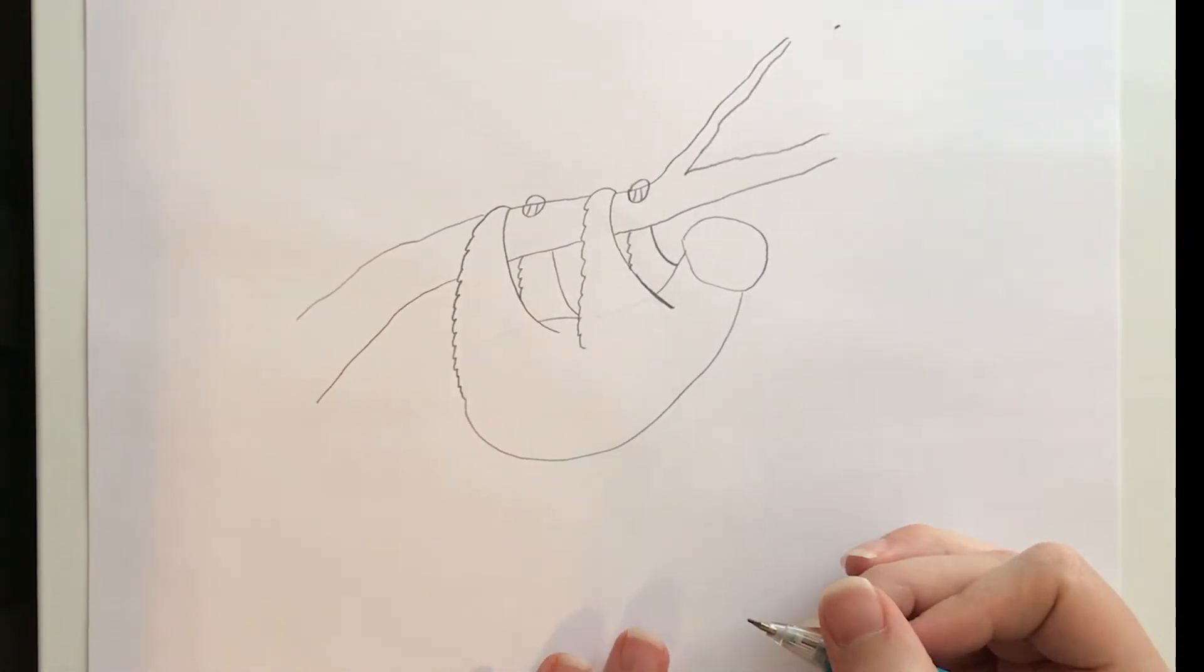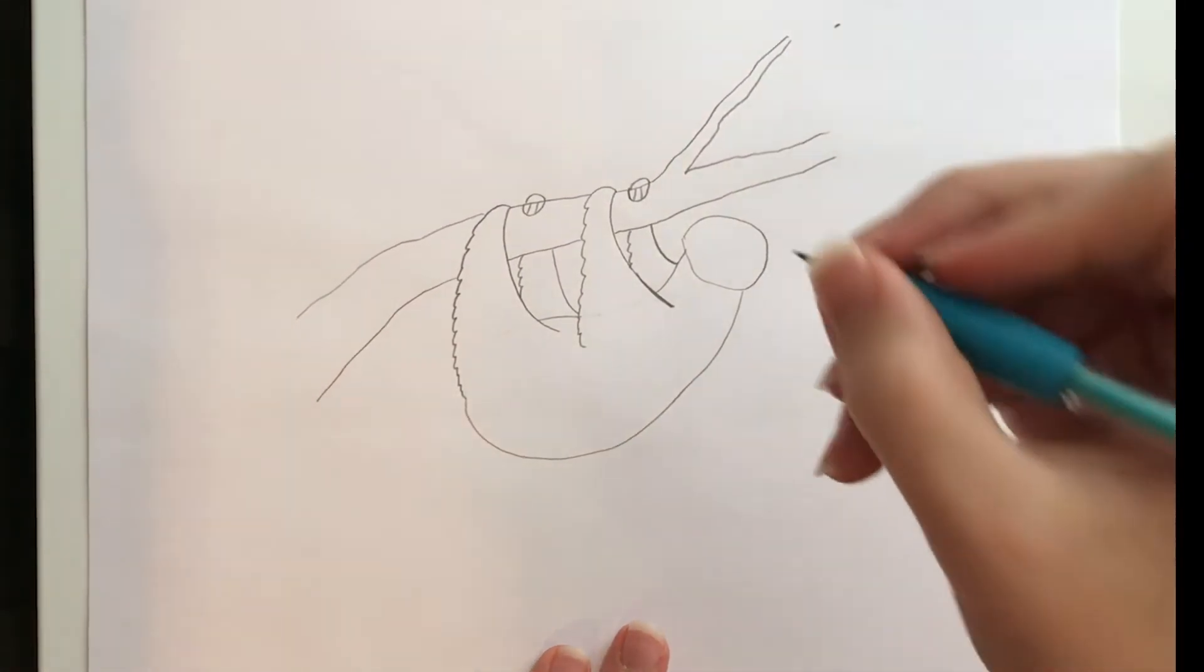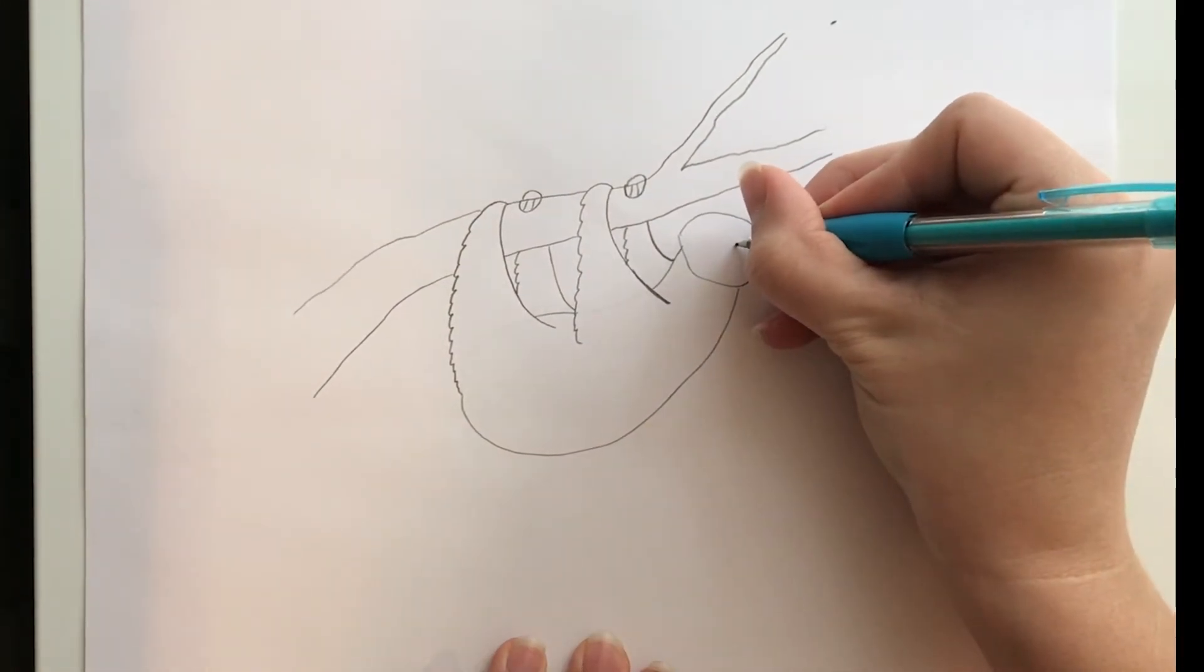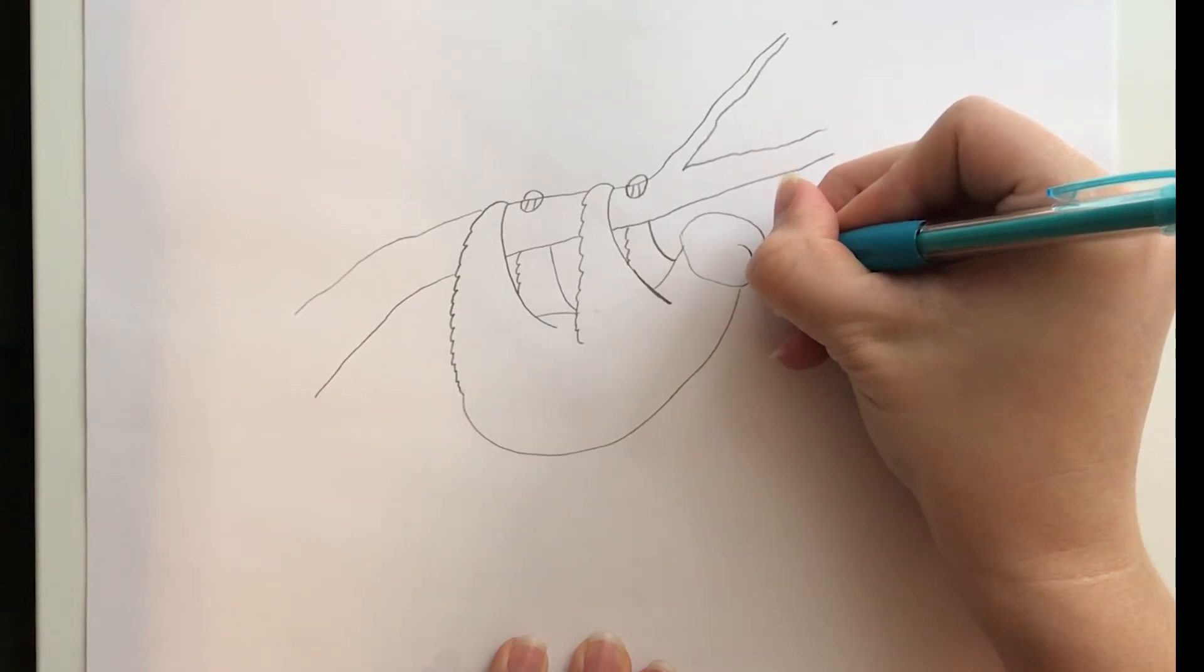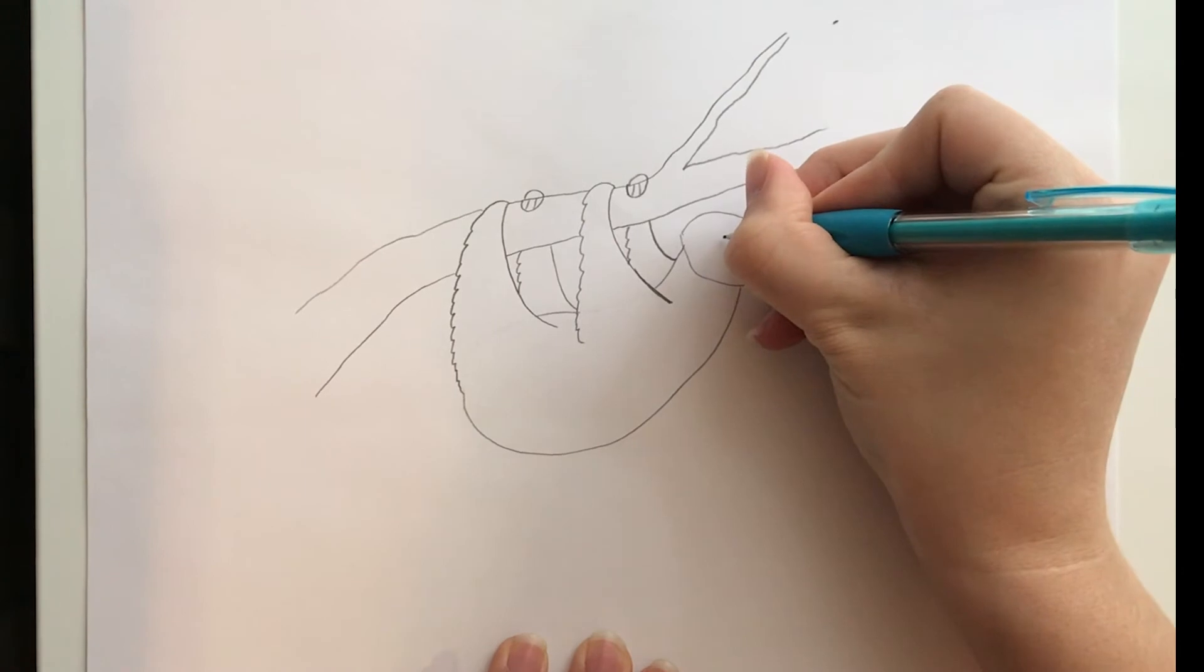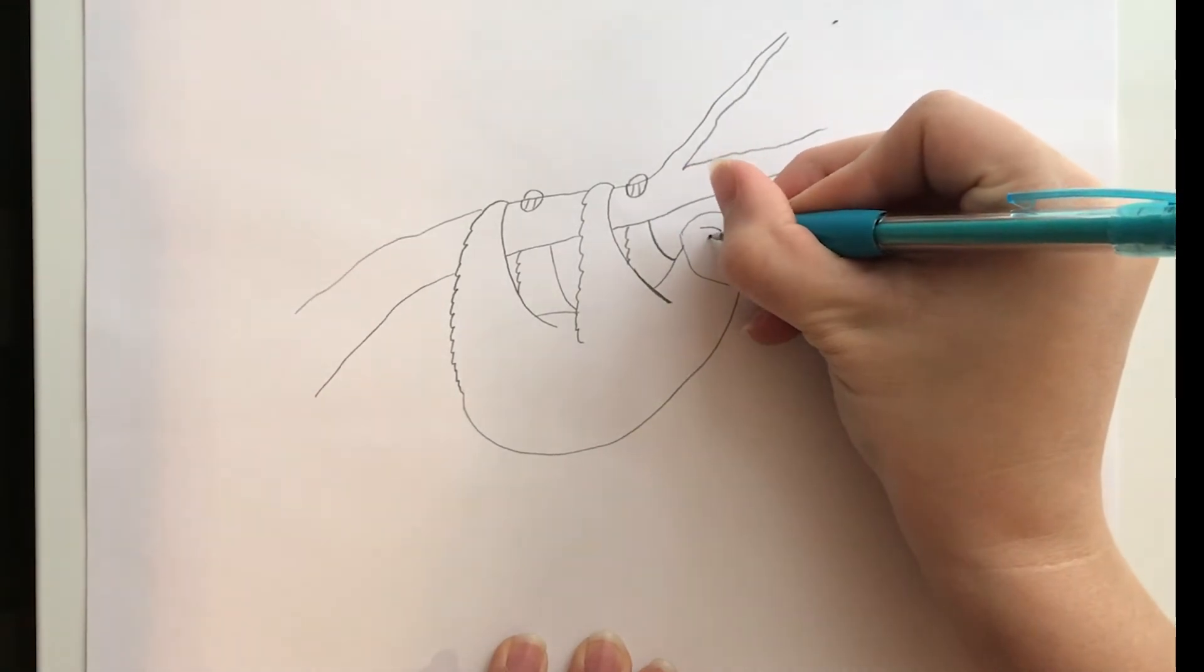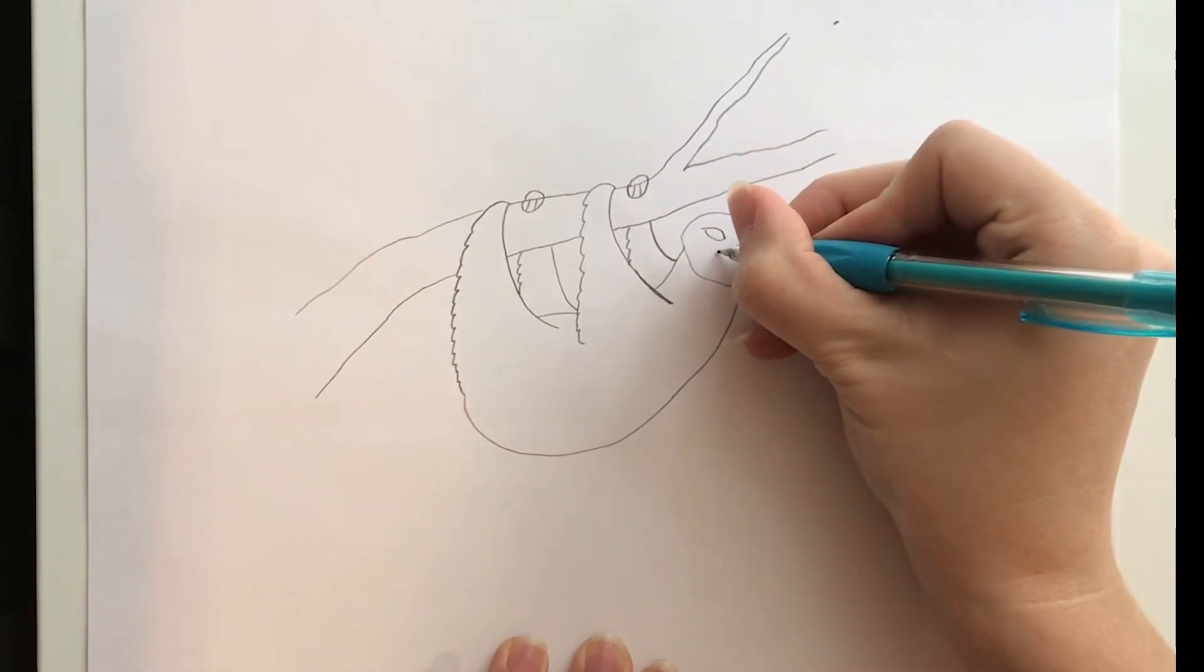Okay now I'm going to move on to drawing the sloth's face. Sloths have an interesting thing about their eyes. They look huge and kind of droopy but it's really a coloring around their eyes kind of like raccoons have a color around their eyes that makes it look like they have masks. I'm going to draw this big teardrop shape and then I'll go back in and draw the eyes later.